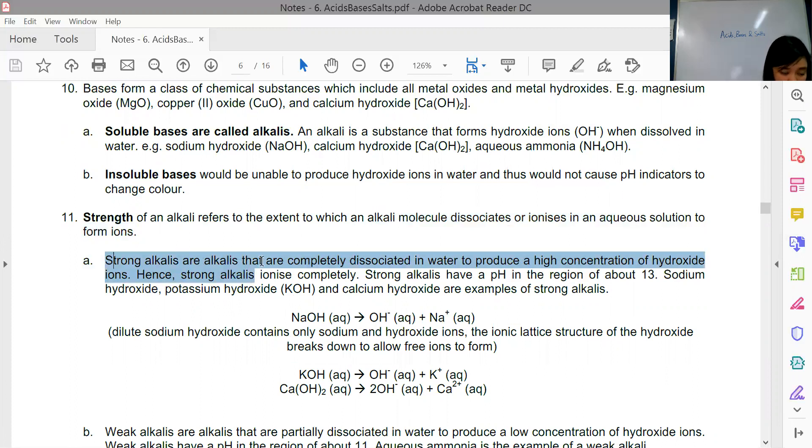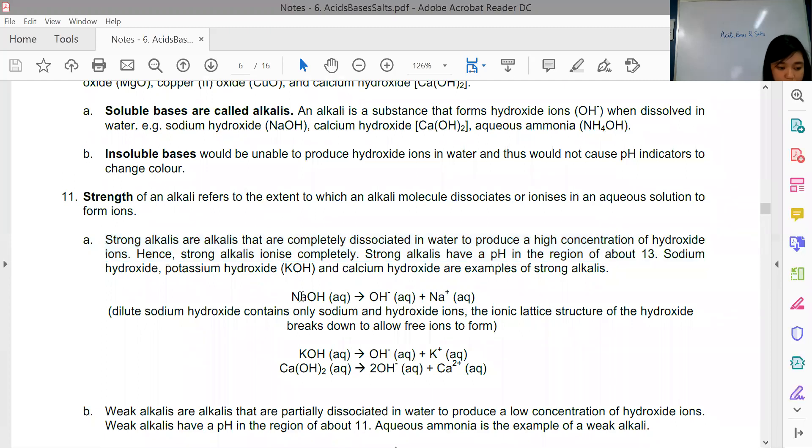If they are strong alkalines, they will completely dissociate in water to produce a very high concentration of hydroxide ions. An example would be sodium hydroxide. It completely dissociates to form OH- and Na+ ions.